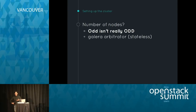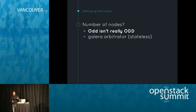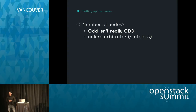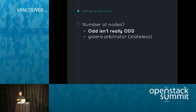If you don't have a sufficiently powerful third machine, you can use a Galera arbitrator instead. You can have two MariaDB nodes and use a Galera arbitrator as the third. It's a stateless daemon, but it counts as one cluster member and protects the cluster from the split brain scenario.